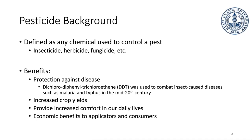Just in general, a pesticide is going to be any substance used to control a pest. We've got a whole bunch of different classes of pesticides. Insecticides kill insects, herbicides kill herbs, fungicides kill fungi, and there's a whole bunch of different ones.